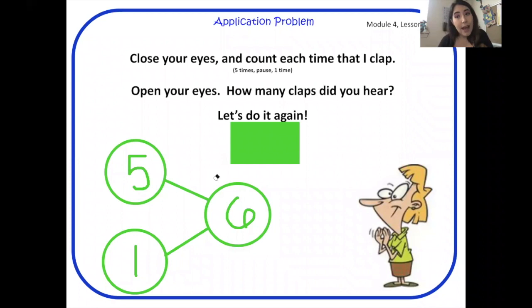Five and one make six. One and five make six. Let's go to another one.